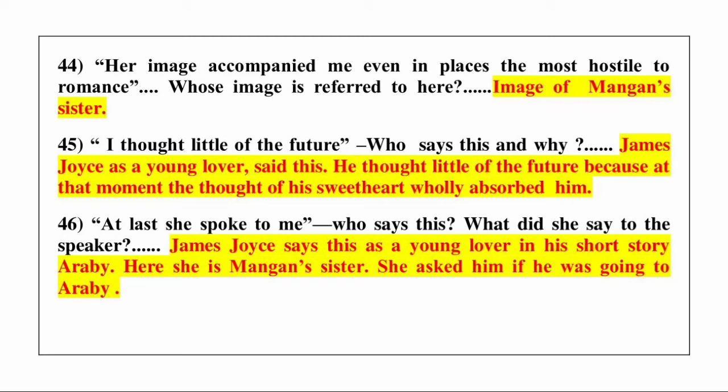Question number 46: 'At last she spoke to me.' Who says this? What did she say to the speaker? Answer is James Joyce says this as a young lover in his short story Araby. Here she is Mangan's sister. She asked him if he was going to Araby.